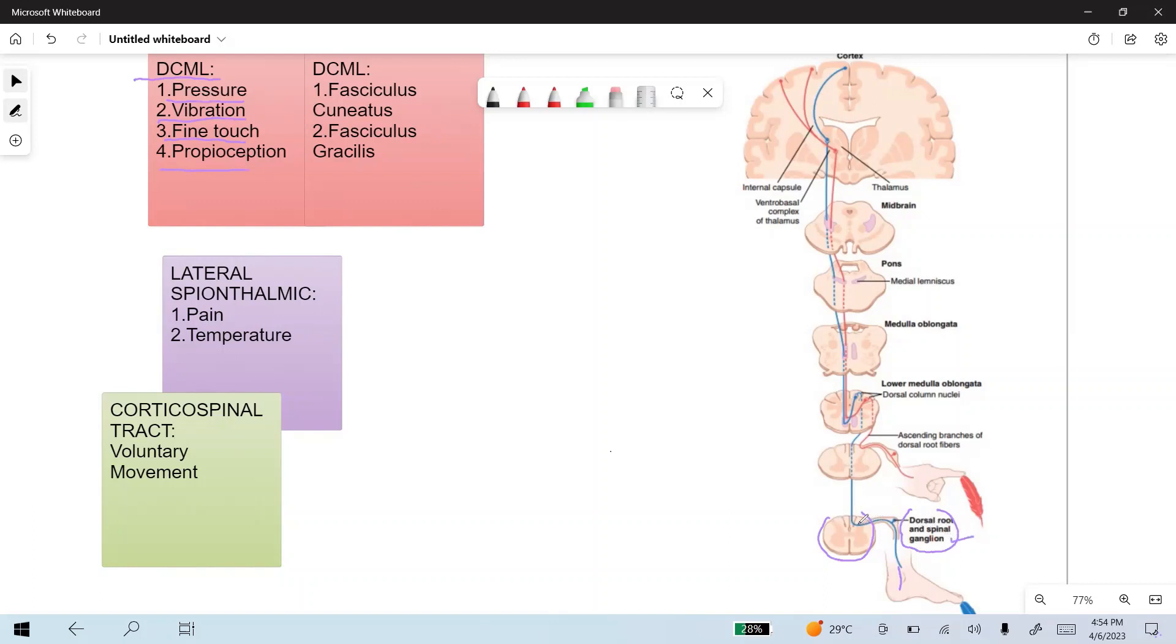Here, the first-order neuron axons ascend uninterrupted at the level of the medulla, up to the level of the medulla.